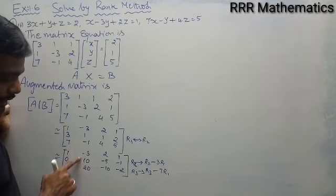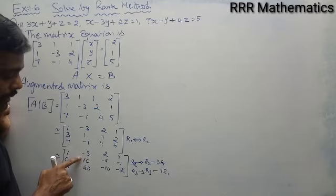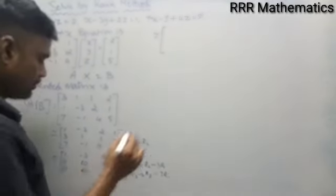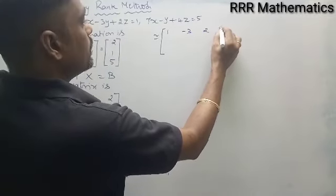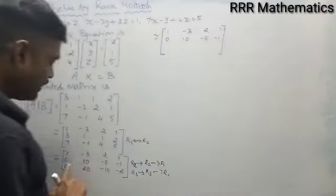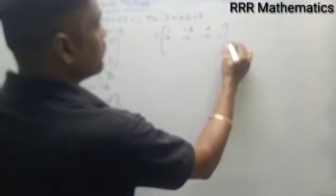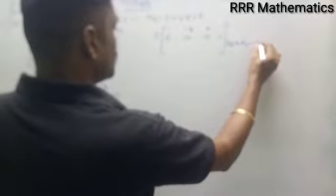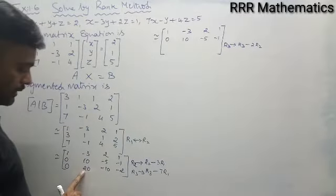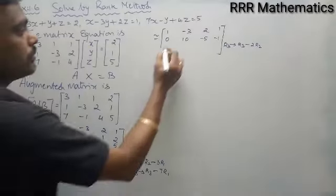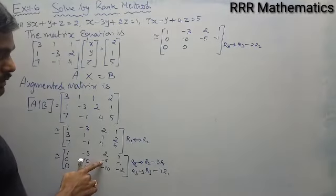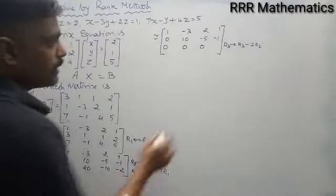To eliminate the (3,2) position, I have 20 in R3 and 10 in R2, so multiplying R2 by 2 gives 20. Since the signs are the same, I subtract: R3 → R3 - 2×R2. First two rows remain: [1, -3, 2 | 1] and [0, 10, -5 | -1]. For R3: 0-0=0; 20-2×10=0; -10-2×(-5)=-10+10=0; -2-2×(-1)=-2+2=0. So R3 = [0, 0, 0 | 0], and the matrix is now in echelon form.